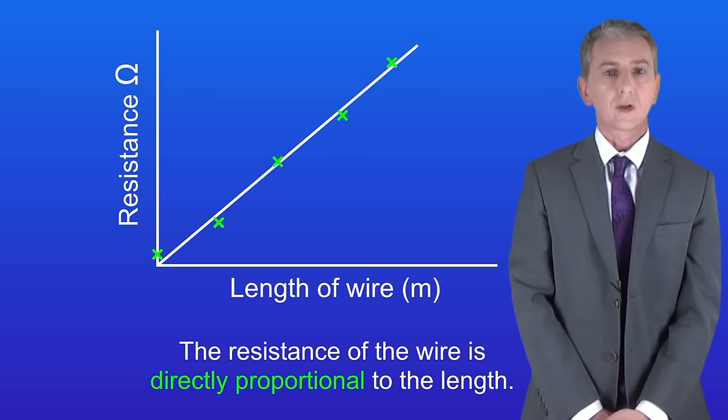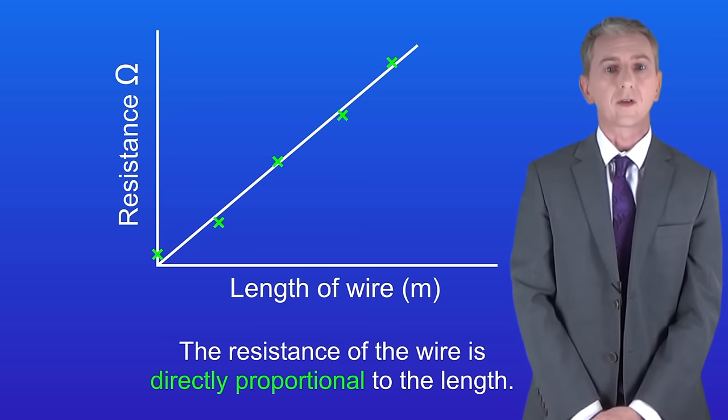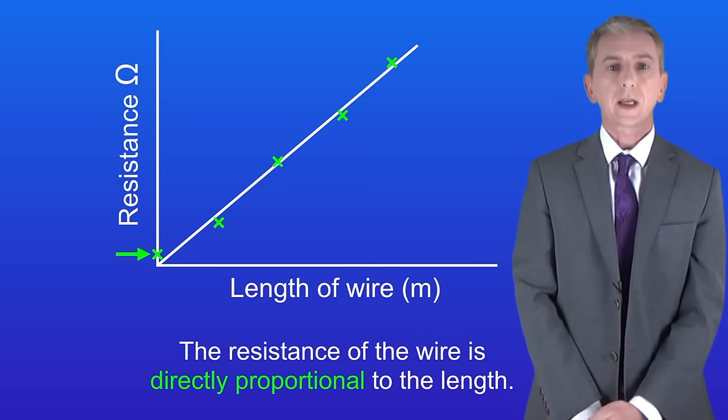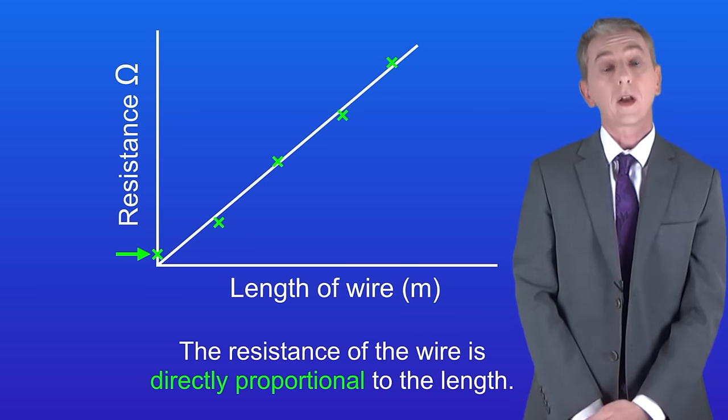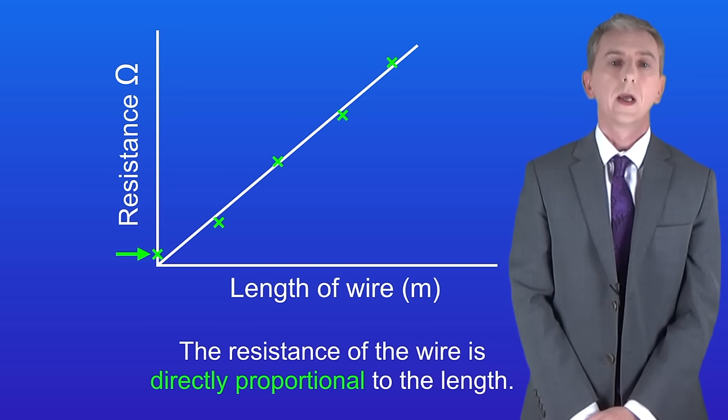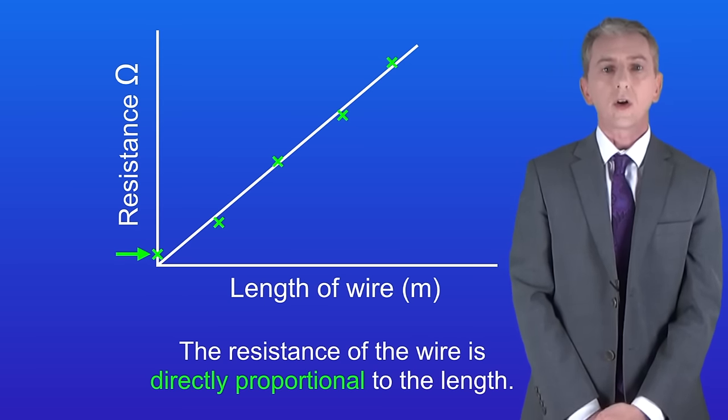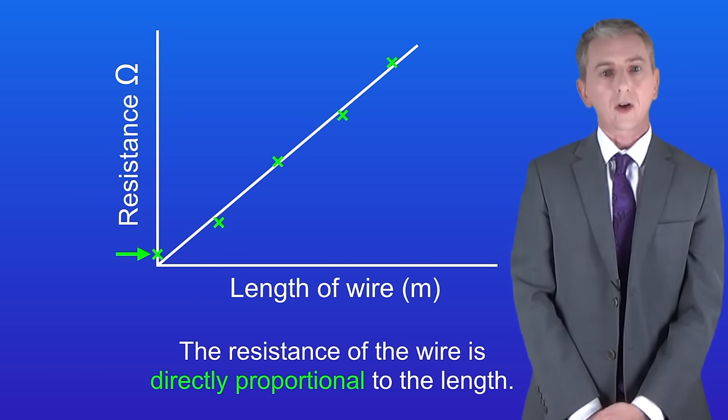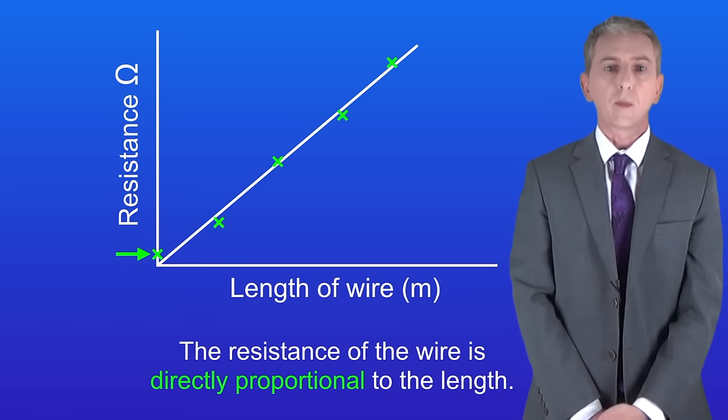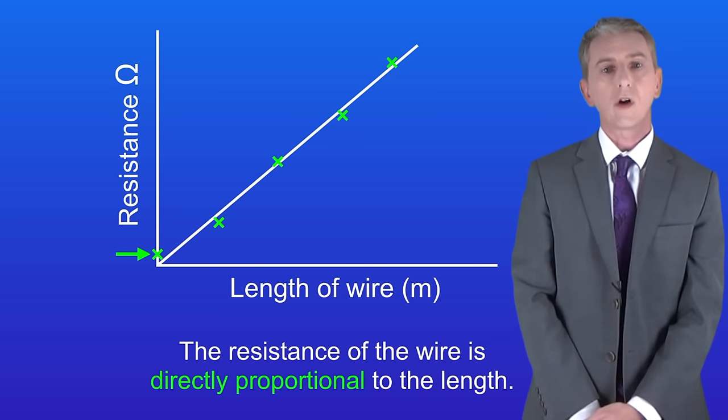Now there are some really important issues about this practical and you could be asked about these in your exam, so they're worth learning. If we look again at the graph we can see that there is actually a small resistance when the length of the wire is zero. Now that resistance should not be there. That's not an actual result. That's a problem with the method and we call it zero error.